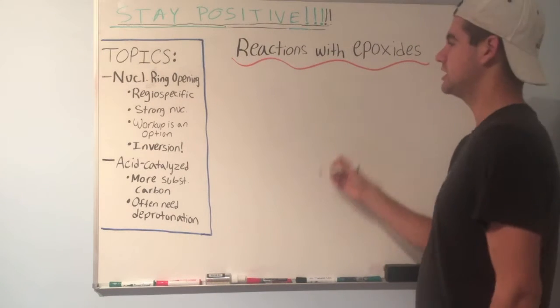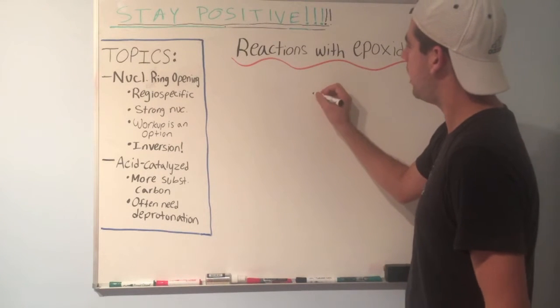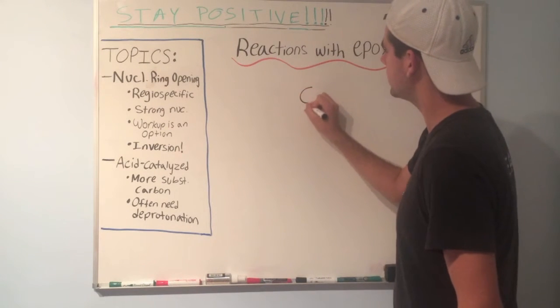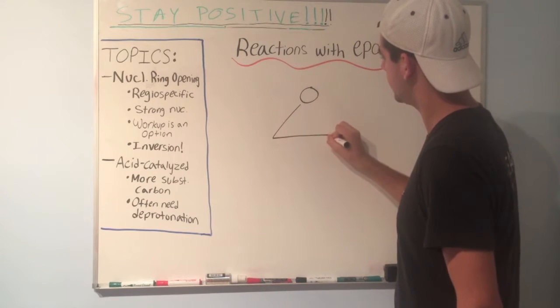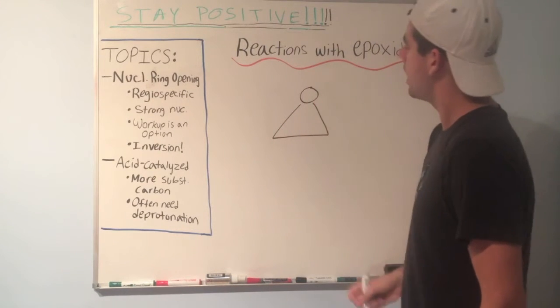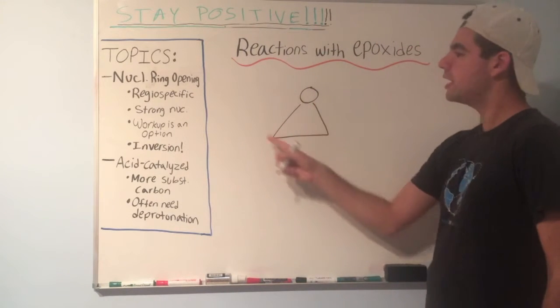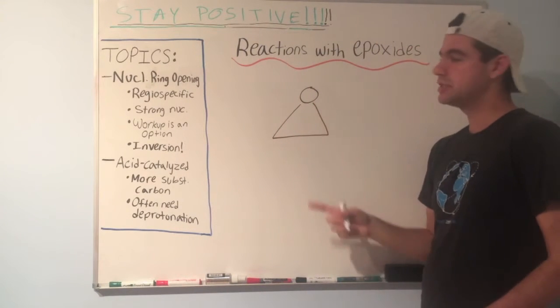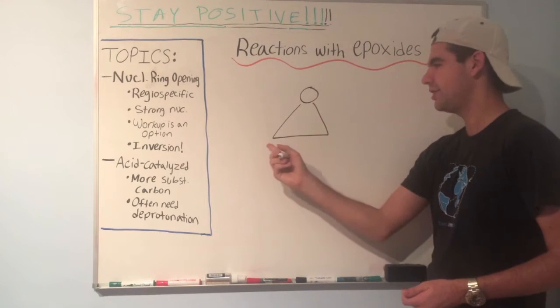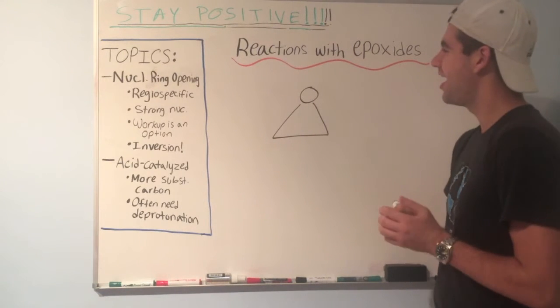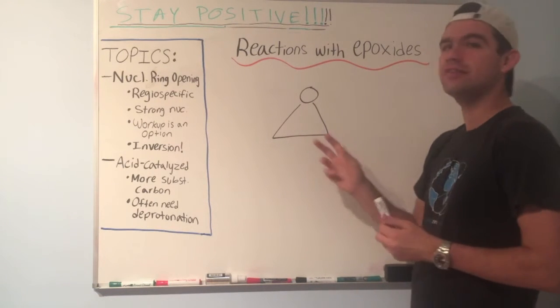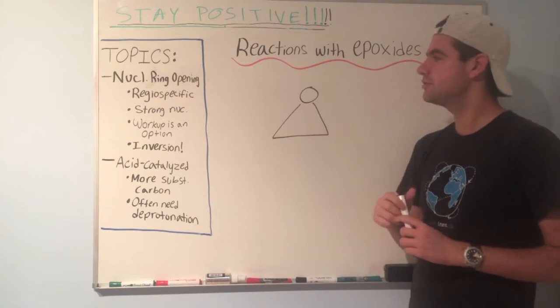So what is an epoxide? An epoxide is a cyclic ether, just like this, and it's a ring with three atoms in it — oxygen being one of them and carbons being the other two. This gives it some unique properties.